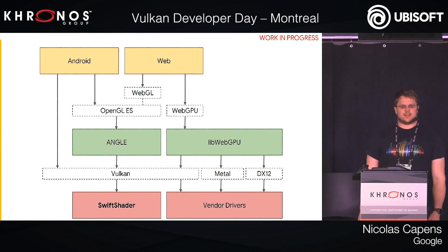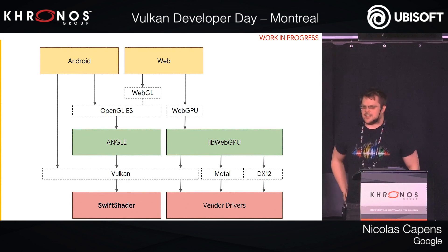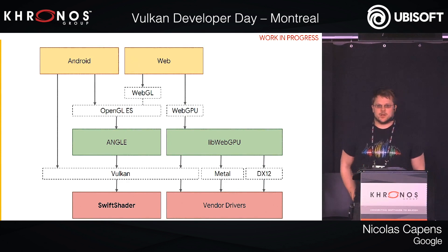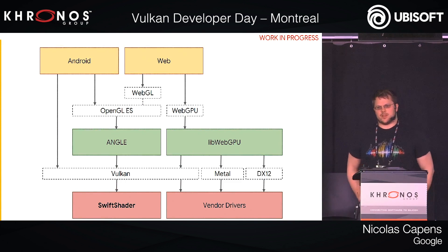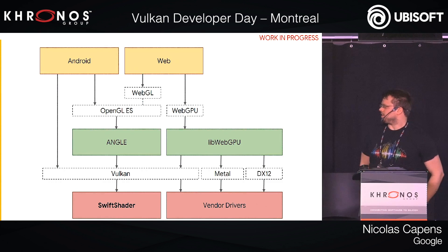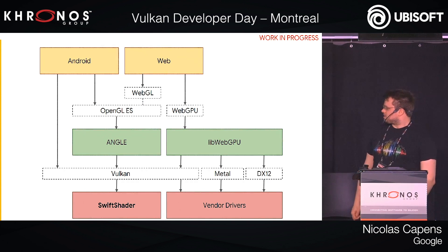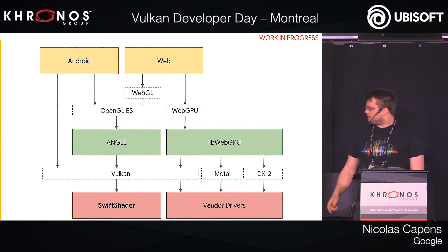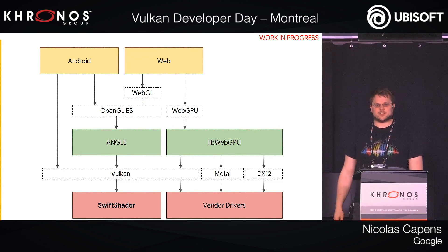Ultimately, this is what we want the world to look like from Google's perspective. If you're targeting Android, you would be talking either directly to Vulkan or preferably to the ANGLE implementation of OpenGL ES. If you're targeting the web, today we have WebGL, which is based entirely on OpenGL ES. The new way to do it will be through WebGPU — currently an API in development — implemented by a library we're building at Google that can target Vulkan, Metal, or DirectX 12, covering all the major next-generation APIs.